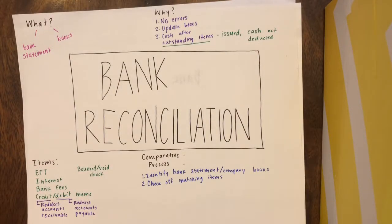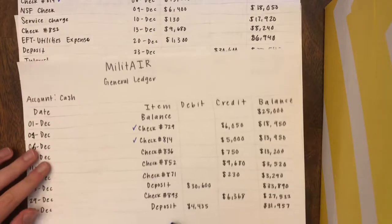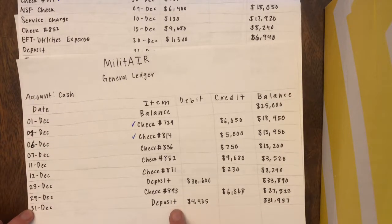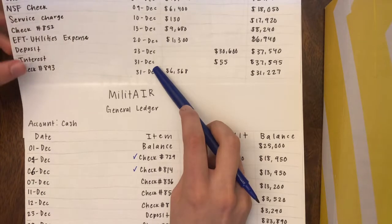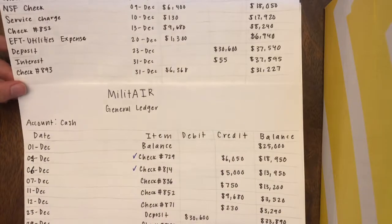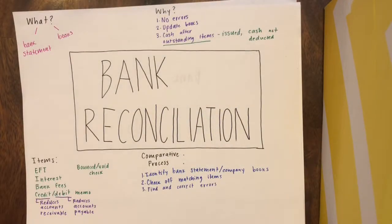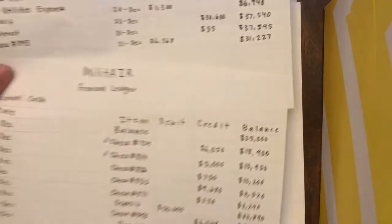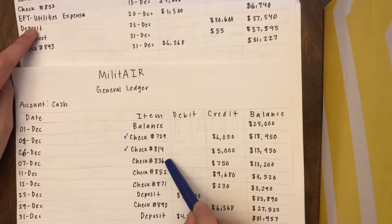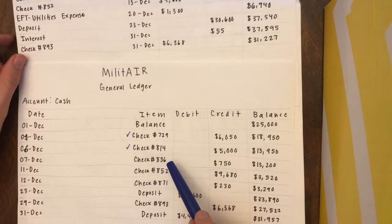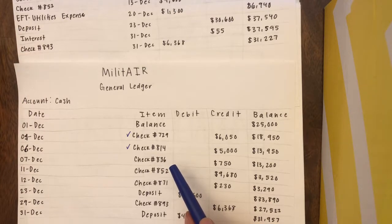The third step in bank reconciliation is to find incorrect errors. In our example between Alaskan Bank and Militaire, we have a deposit on December 31st in the company books but it does not show up on the bank statement. To correct that in the bank reconciliation sheet, we must add a deposit in transit to the bank side of the sheet. You must also adjust for timing differences — for example, check number 836 shows up on the general ledger but not in the bank statement, so you must subtract that outstanding check from the bank statement side of the sheet.